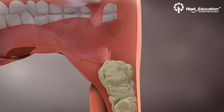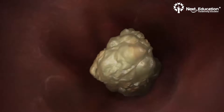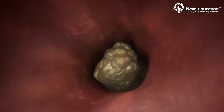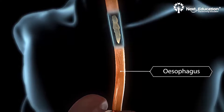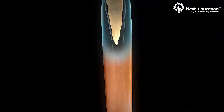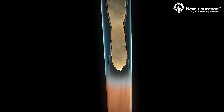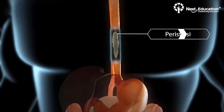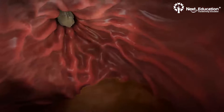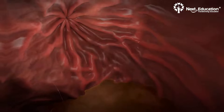The bolus swiftly moves through a narrow tubular muscular organ called the esophagus. The muscular wall of the esophagus contracts and expands rhythmically in a process called peristalsis to push the food forward. At the end of the esophagus, a muscular ring called the esophageal sphincter allows the food to enter the stomach and then closes.